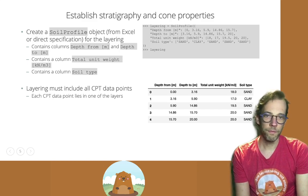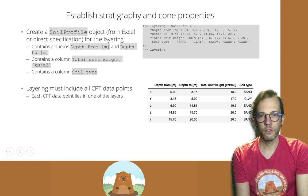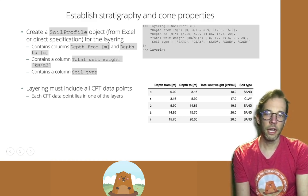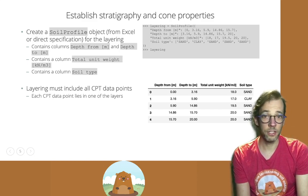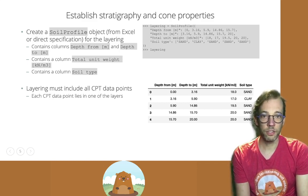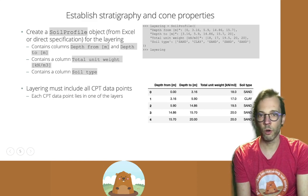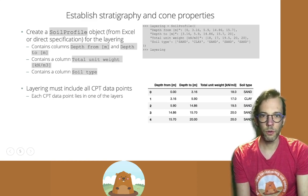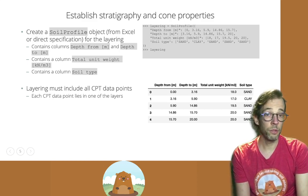First of all, we can show how to establish a stratigraphy and a selection of cone properties for a CPT processing object. The stratigraphy determines the sequence of layers in which the cone has penetrated. So each measured point will belong to a certain layer.